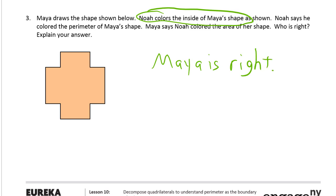And explaining the answer is: Area is the space inside a shape, which Noah shaded, or which is what Noah shaded.